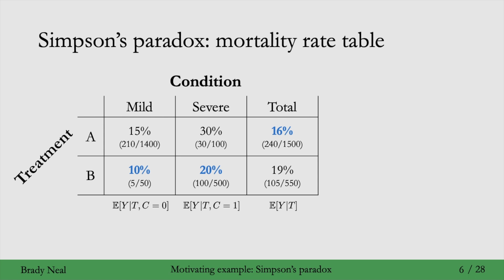But then something interesting happens when you subgroup the data by condition. Among patients who have mild condition, 15% of those given treatment A die, compared to only 10% of those given treatment B. So treatment B actually looks better among mild-condition patients. And it's the same thing with severe-condition patients — only 20% mortality among those who received treatment B, whereas a larger 30% of people with severe condition who received treatment A died. This is Simpson's paradox: looking at the total population, treatment A has a lower mortality rate, but in each subgroup, treatment B looks better.